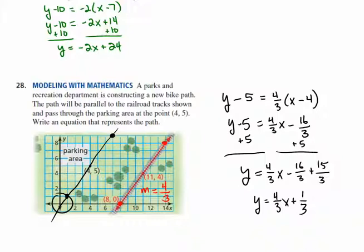I know the line is parallel because it has the same slope as the original. However, I need to check — plugging in X equals 4: 4/3 times 4 is 16/3, plus 1/3 is 17/3, which is not 5. Let me recheck: negative 16/3 plus 15/3 equals negative 1/3. Always check your work. That's it for this video.